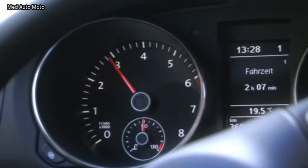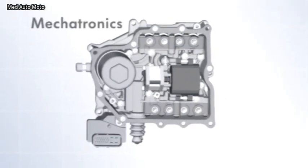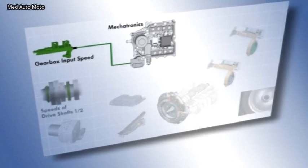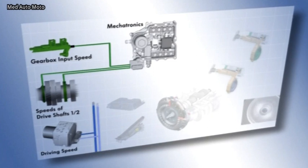How does the dual-clutch gearbox work in real terms? The mechatronics unit evaluates a selection of data. The gearbox input speed. The speeds of both drive shafts. The ABS control unit determines the wheel speeds.